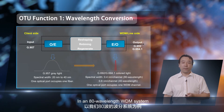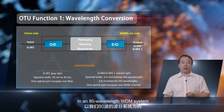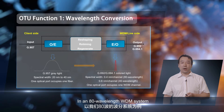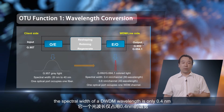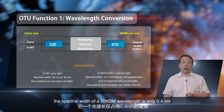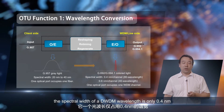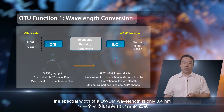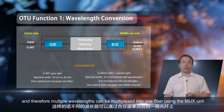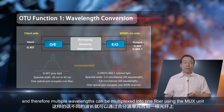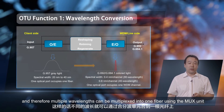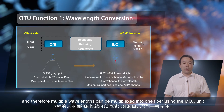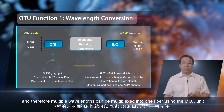In an 80-wavelength WDM system, the spectral width of a DWDM wavelength is only 0.4 nanometers. Therefore, multiple wavelengths can be multiplexed into one fiber using the multiplexer unit.